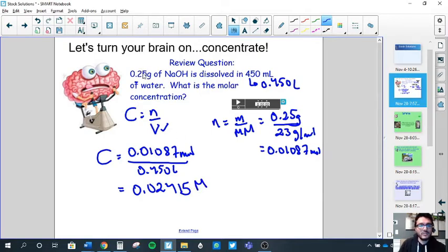But going back to the question, we have two sig figs here, two sig figs here. So we round to two sig figs, which is 0.024 moles per liter. You can write it in scientific notation if you want, 2.4 times 10 to negative two, but you don't have to.